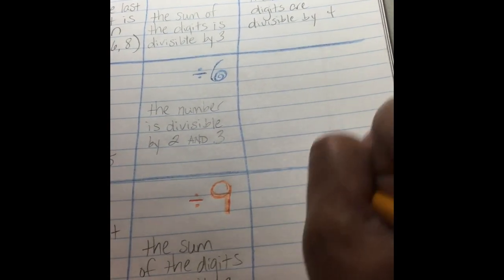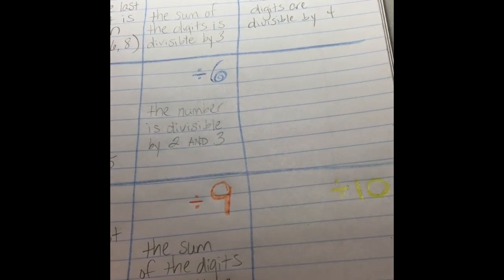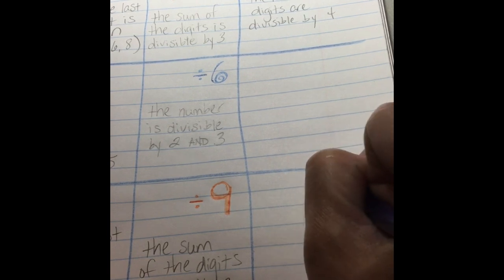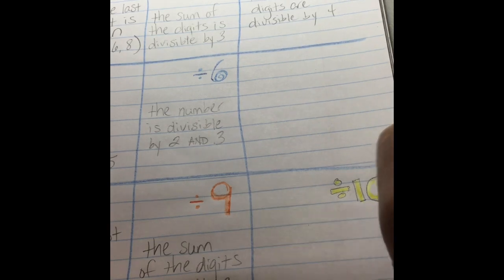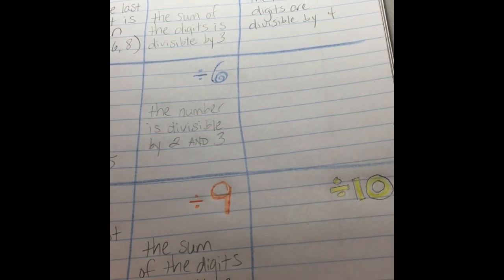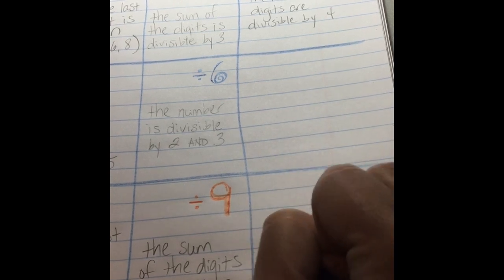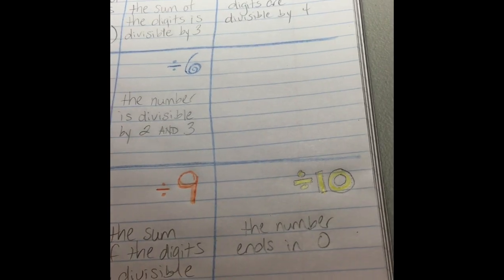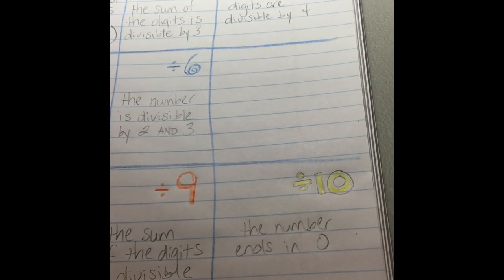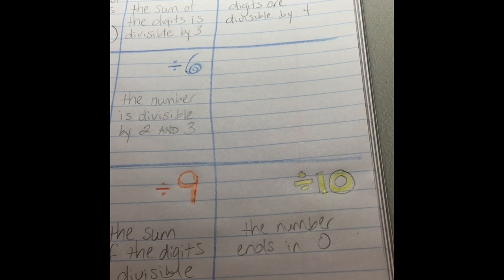And divisible by 10. Again, I'm going to my yellow, so I'm going to outline it with my pencil. Divisible by 10. This is another one you probably know. My number is divisible by 10 if the number ends in a zero. 10, 20, 30, 140, 350, 1270. As long as it ends in a zero, it is divisible by 10.